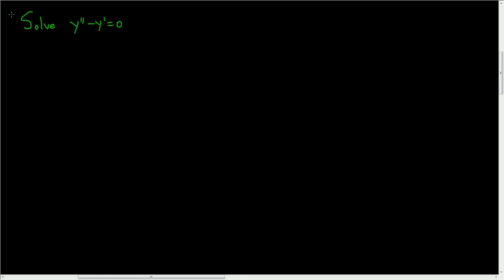We're going to solve this differential equation using series. We'll start by writing down y as an infinite series — in particular, as a power series centered at zero. That will be the sum from n to infinity of c sub n times x to the n.